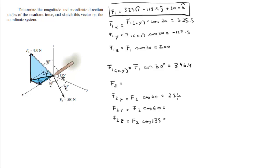So the values are 250 and 250, and this is negative 353.6. So this is 250i plus 250j minus 353.6k.